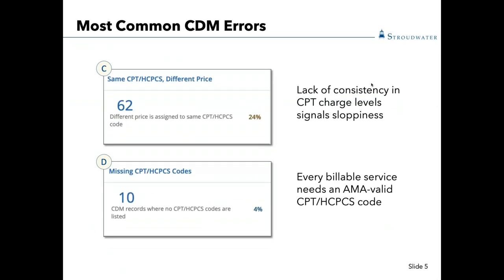The next one looks at the same CPT or HCPCS code with a different price. The reason this is important is we want to ensure that we have the same pricing set for a certain CPT code. Often, because most electronic health record systems are driven by procedure codes and not CPT codes, we see the creation of multiple procedure codes within a system, all with different pricing. As a result, when coding claims or generating charges, we may select charges at either a higher or lower level depending on which code was selected. This looks at where you have multiple CPT codes but different price lists, and the goal is price consistency across your price list.